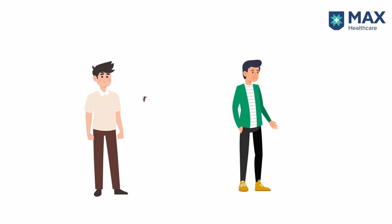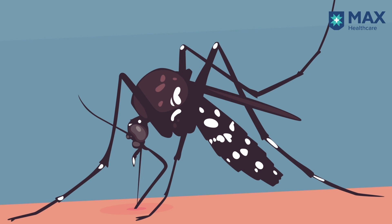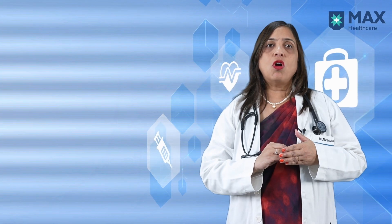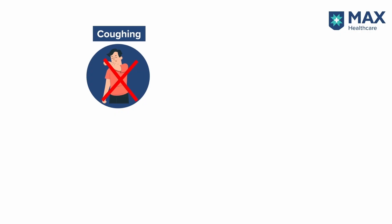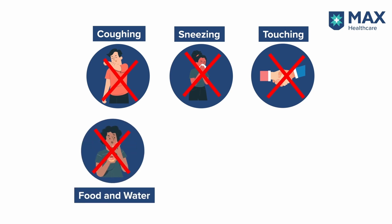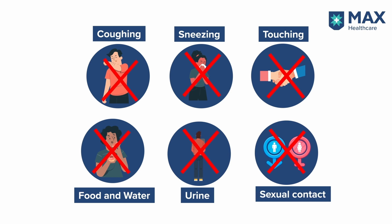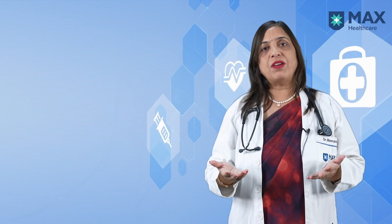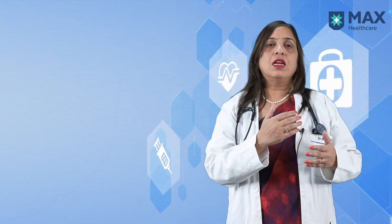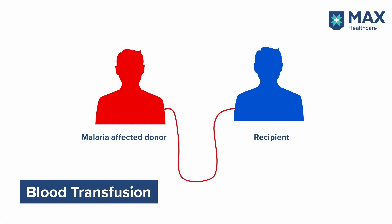Malaria spreads from one human being to another only through the bite of the female Anopheles mosquito. Unlike viral fever, it does not spread by coughing, sneezing, touching each other, through food and water, urine, or through sexual contact. It is only through the bite of a mosquito. Another way it can be transmitted is through infected blood transfusion, where blood infected with malaria is given to another person.